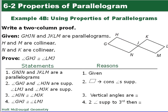Alright, another proof. So we're told that GHJN and JKLM are both parallelograms. H and M are collinear, so that means these are on the same line. And N and K are collinear. We want to prove that angle GHJ, so that's this angle, is congruent to LMJ. So LMJ is this angle.